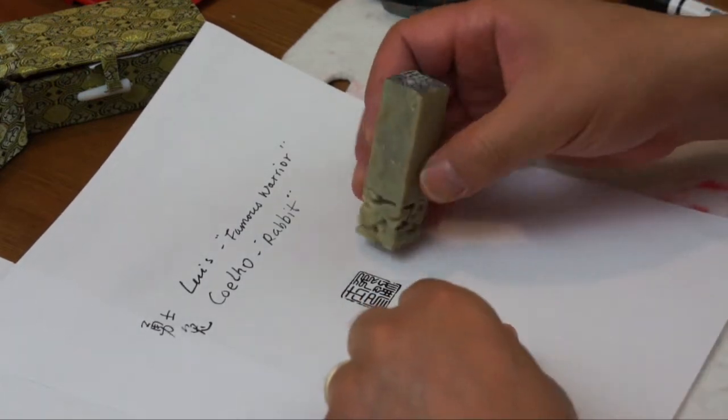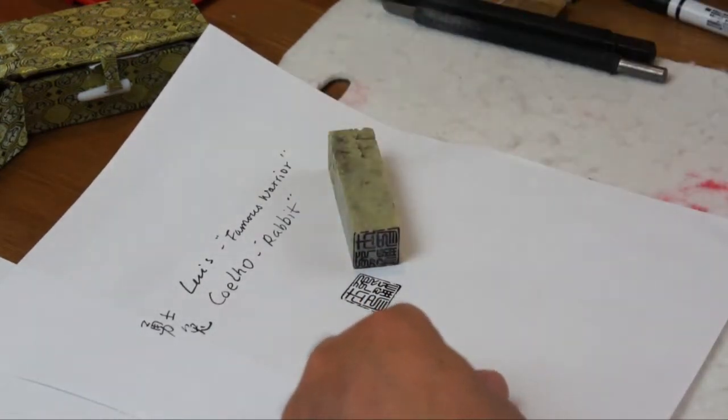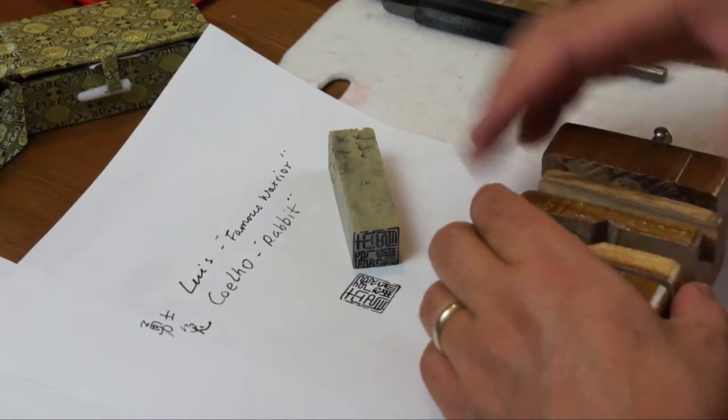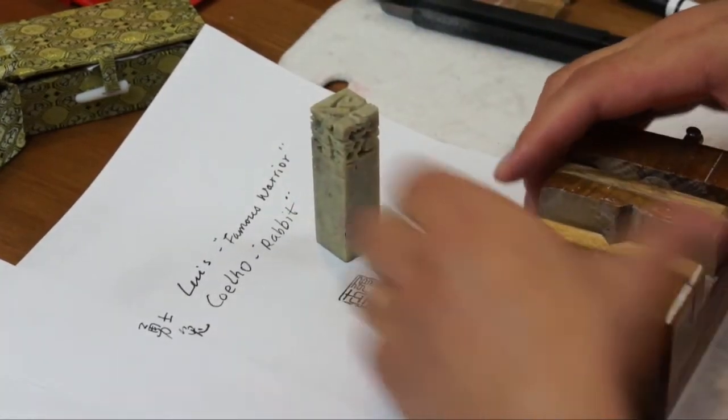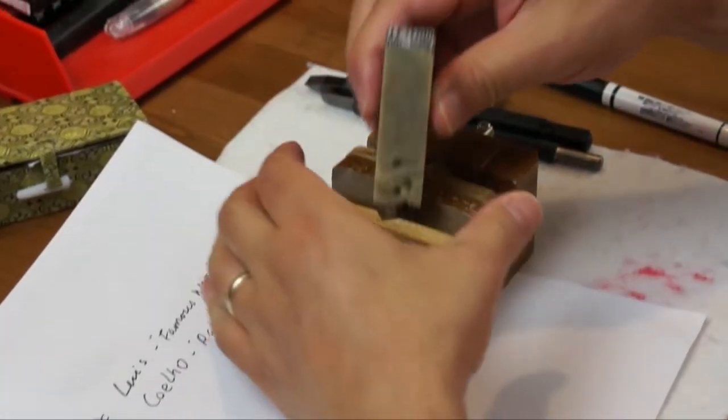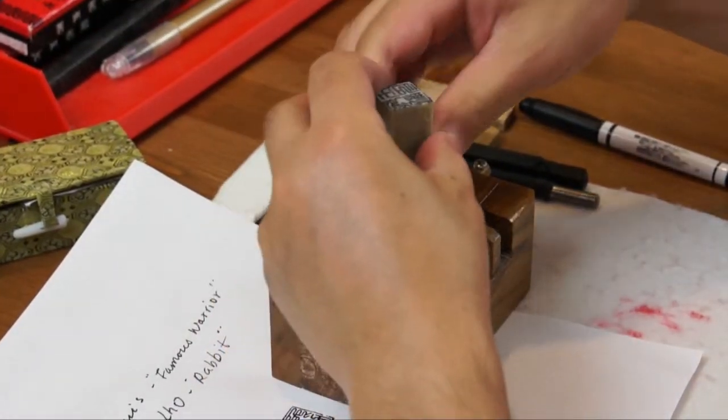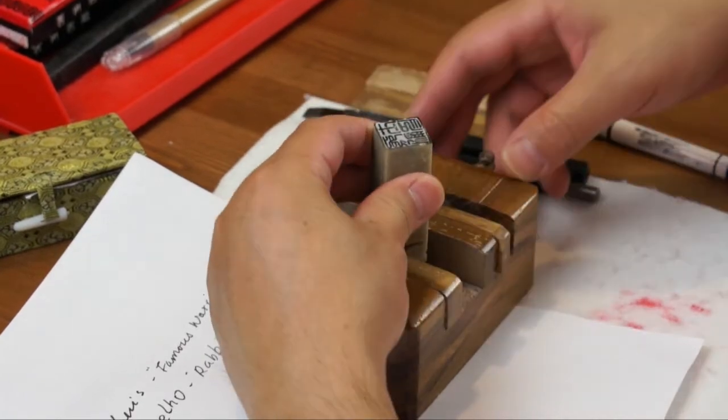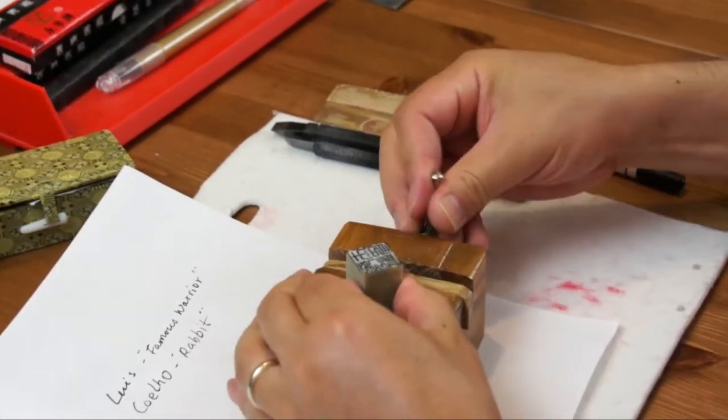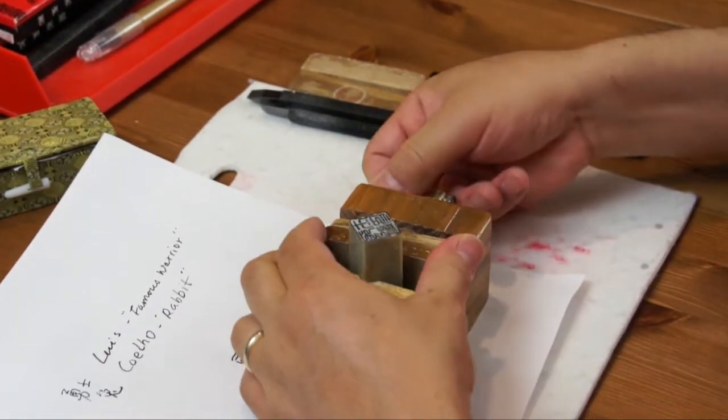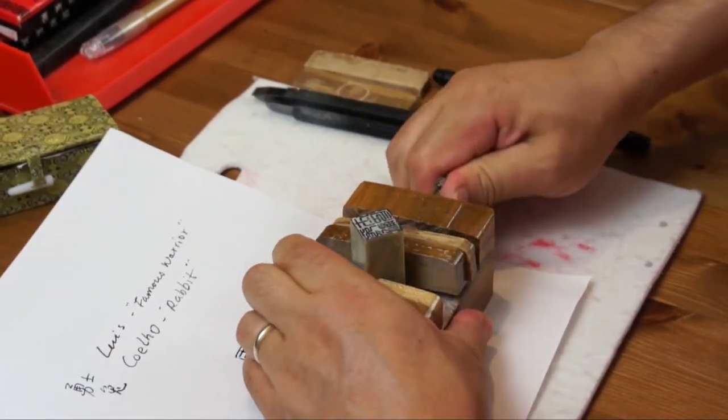We're going to carve it on this thing. So this is the Qing Tian stone with a dragon top. So I use the clamp to hold it to protect the carving on the other end. Also to stabilize it.